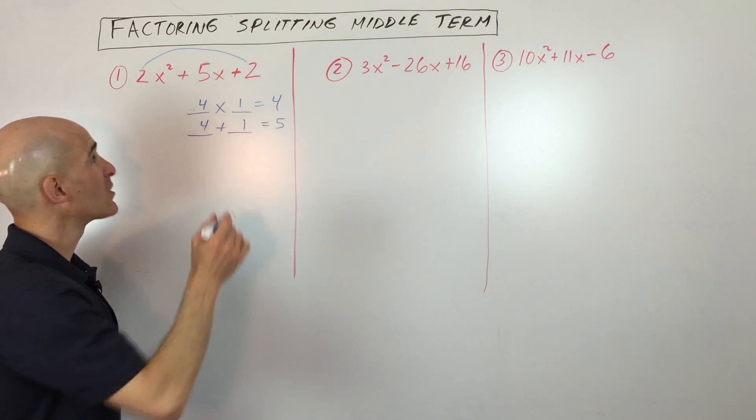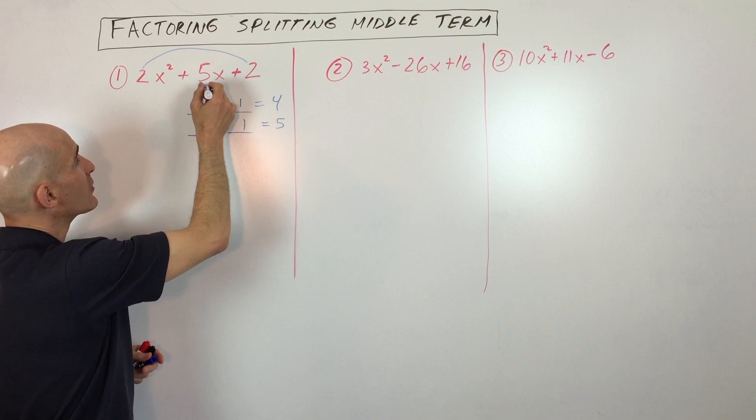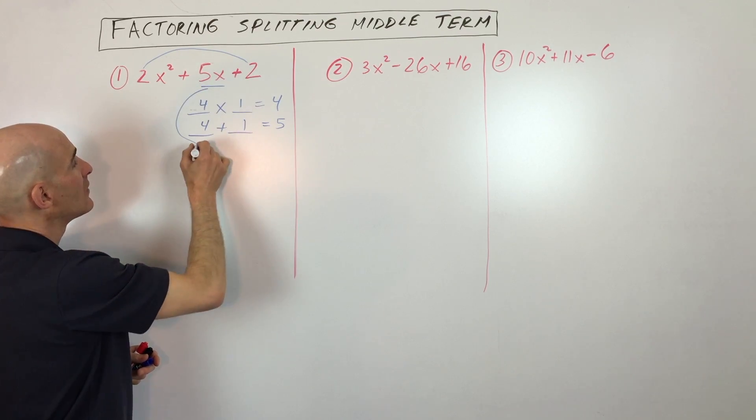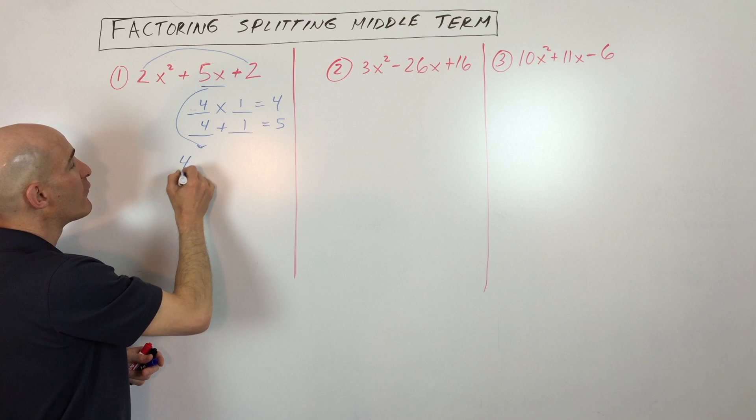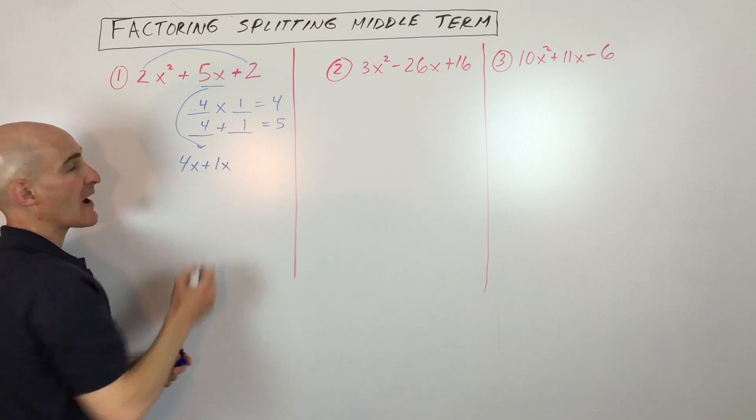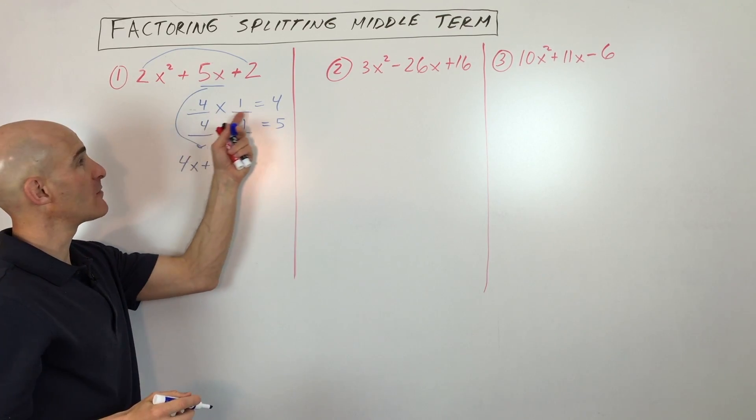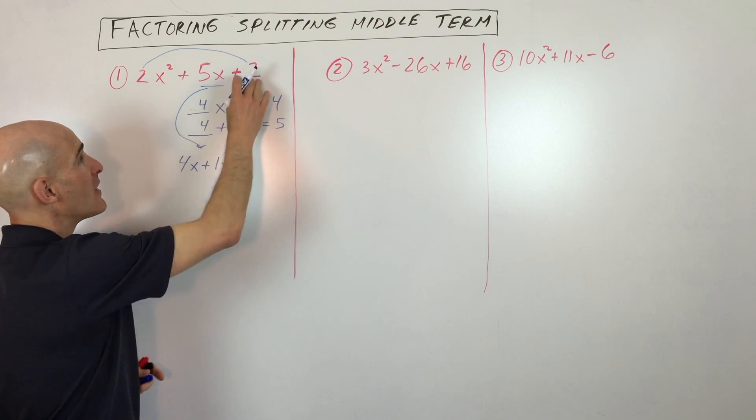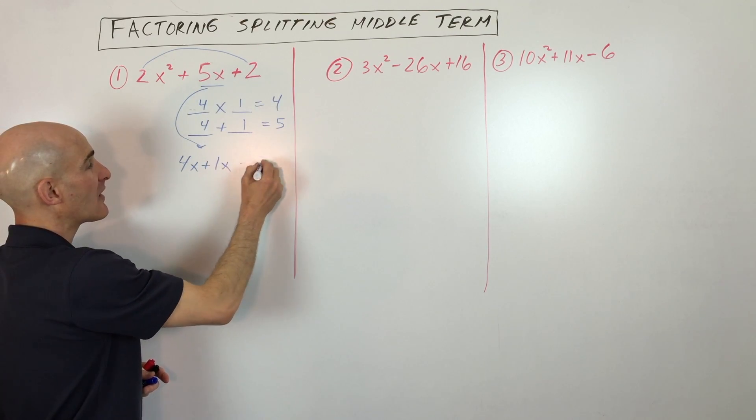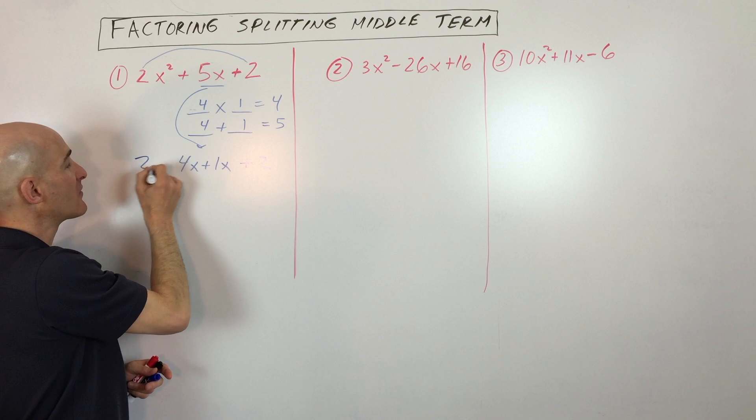And then what we're going to do is split this middle term. So instead of 5x, we're going to split it up into 4x plus 1x. Now where did I get the 4x and 1x from? That's from these two numbers here. Then you just bring down the two, that last term, and bring down the 2x squared, that's the first term.